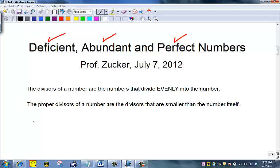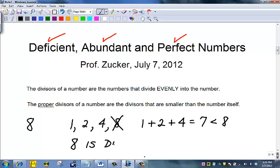Let's take 8, for example. The divisors of 8 are the numbers that divide evenly into 8. They would be 1, 2, and 4, and 8 itself. But 8 is not a proper divisor of 8 because the proper divisors have to be smaller than the number itself. So the proper divisors of 8 are 1, 2, and 4. Let's add them up. 1 plus 2 plus 4 equals 7, which is less than 8, and for that reason we say 8 is a deficient number.